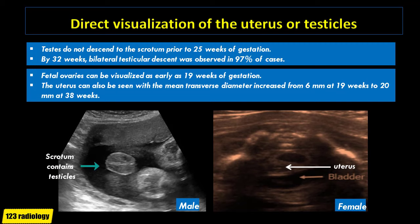Sometimes it is easy to determine if the fetus is a boy or girl, but sometimes it is not easy. If we cannot see the external genitalia or they are ambiguous, the first step is to assess the internal reproductive organs — direct visualization of the uterus or the testicles. Testicles do not descend to the scrotum prior to 25 weeks of gestation. By 32 weeks, bilateral testicular descent was observed in 97% of cases. The fetal ovaries can be visualized as early as 19 weeks of gestation.